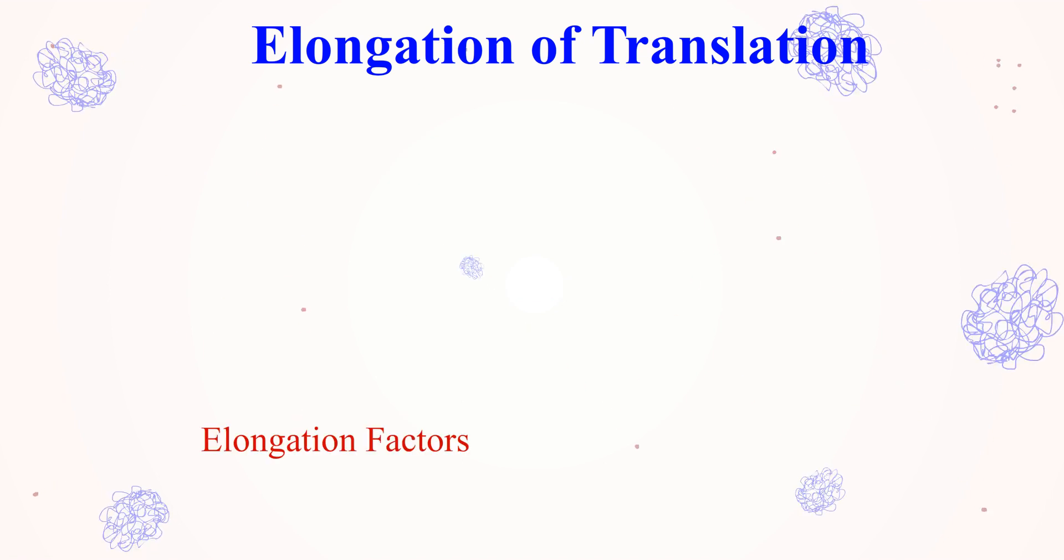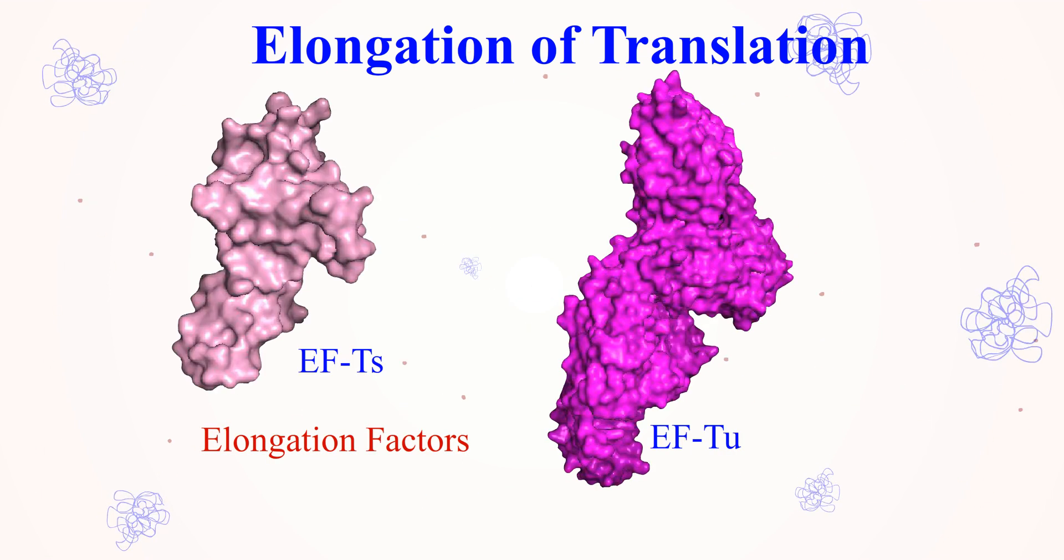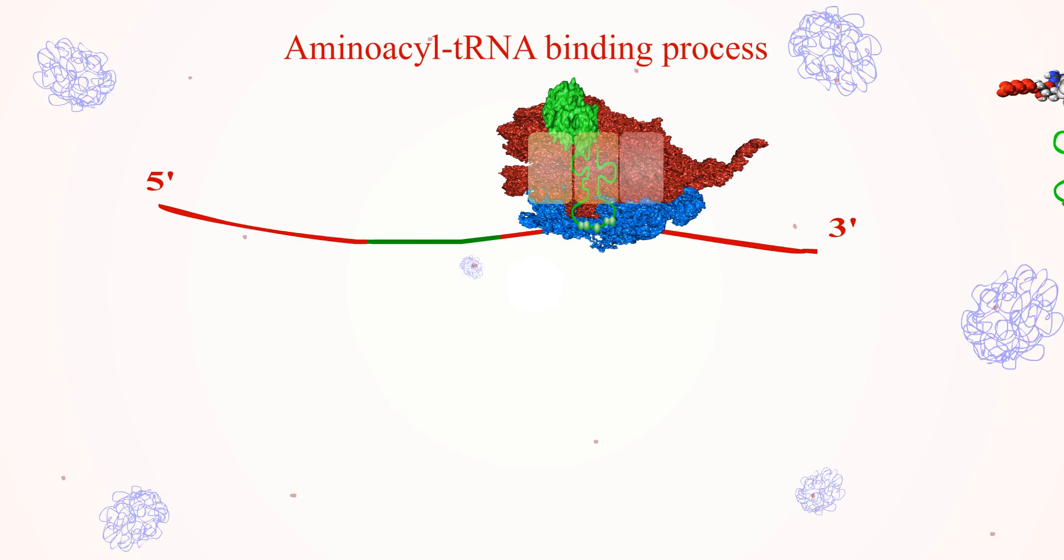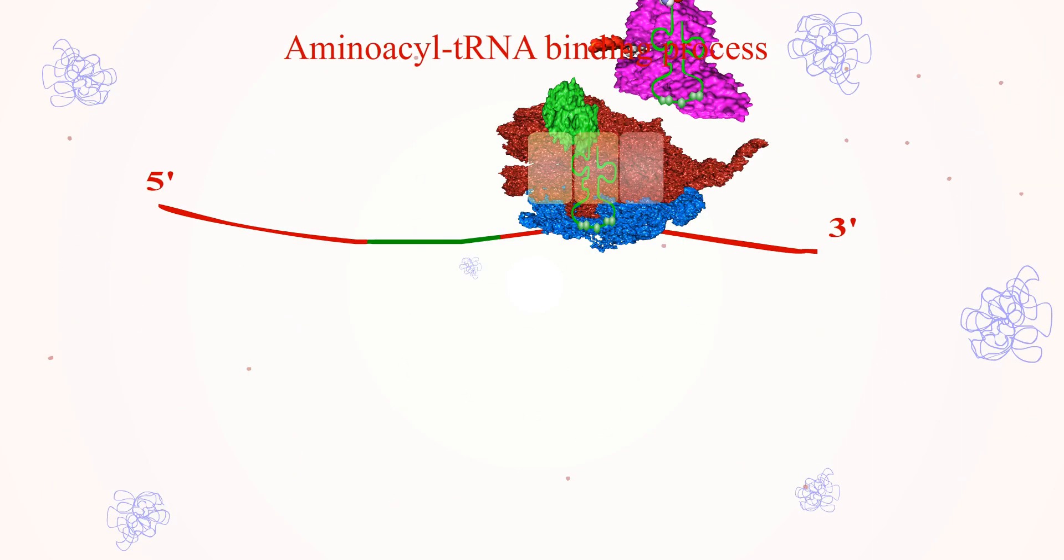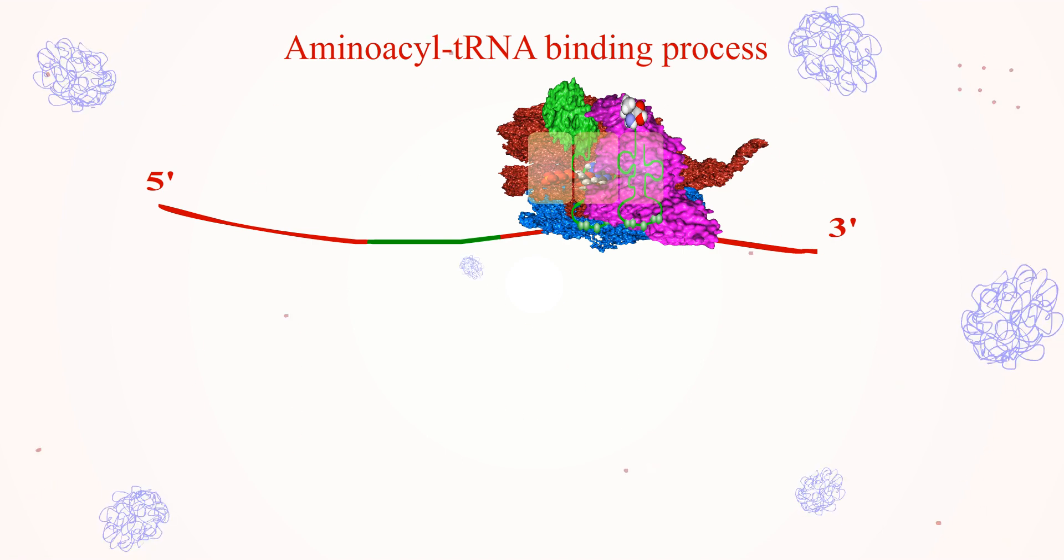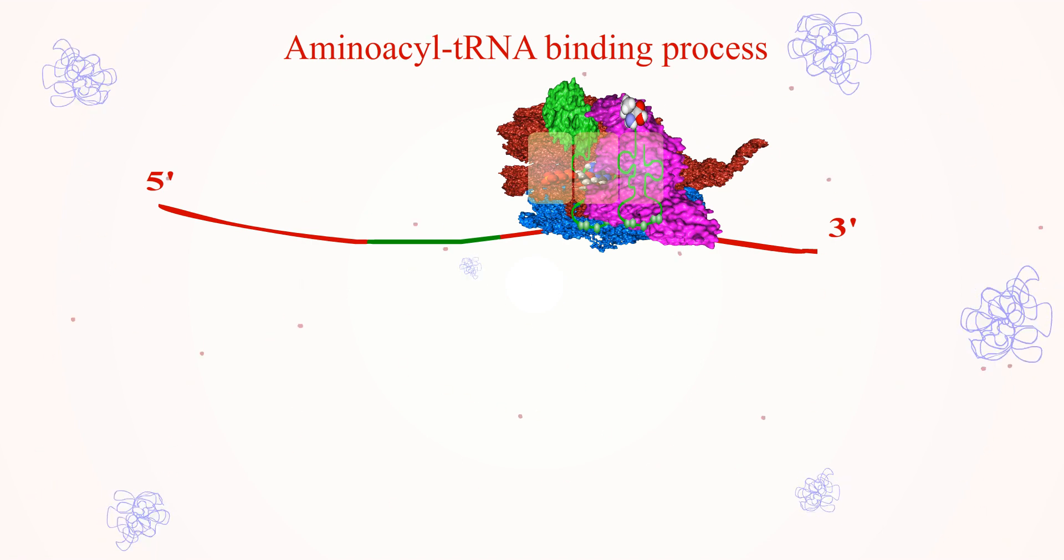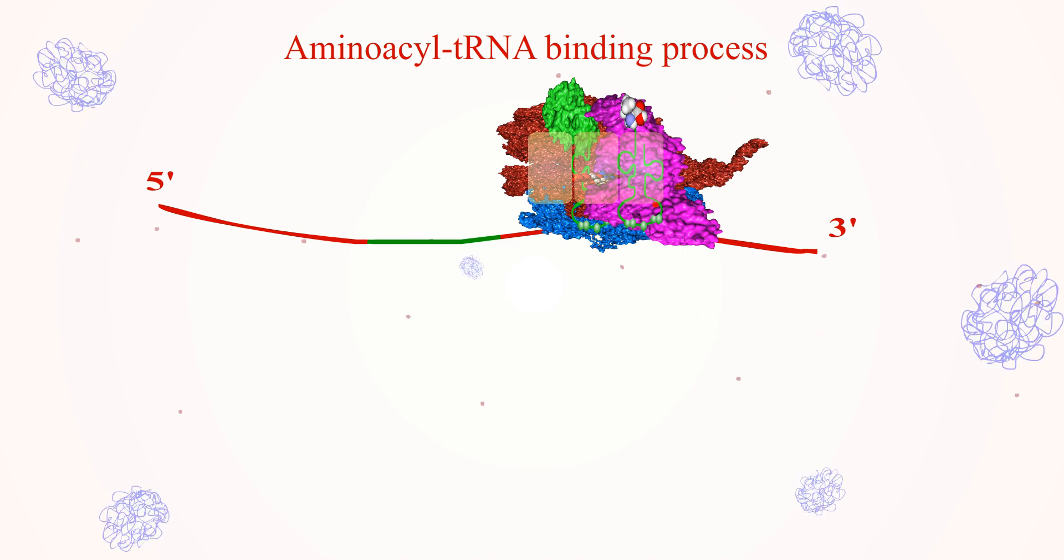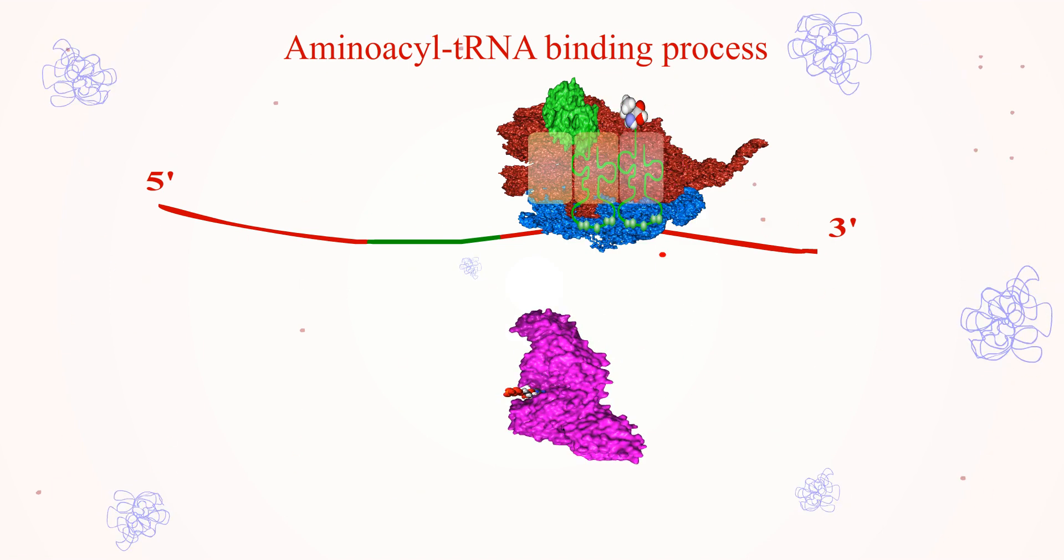With several elongation factors like EF-Tu and EF-Ts. Aminoacyl-tRNA binding process: The amino acid molecule that represents the second codon now binds to the A-site via codon-anticodon interaction, with the help of elongation factor EF-Tu and GTP. On binding, the GTP is hydrolyzed to GDP and EF-Tu is released.